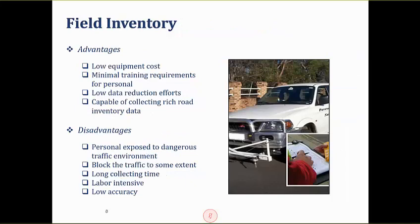Field inventory is probably the most common method. Essentially, you drive a vehicle equipped with GPS and record all the highway features — light poles, traffic signs, traffic signals, guardrails, barriers, and everything you can see on the roadway. You use paper and pencil to record whatever you see. The advantage is low equipment cost and minimal crew training. But the problem is it's potentially dangerous to traffic and to the data collector, and it's quite labor-intensive.